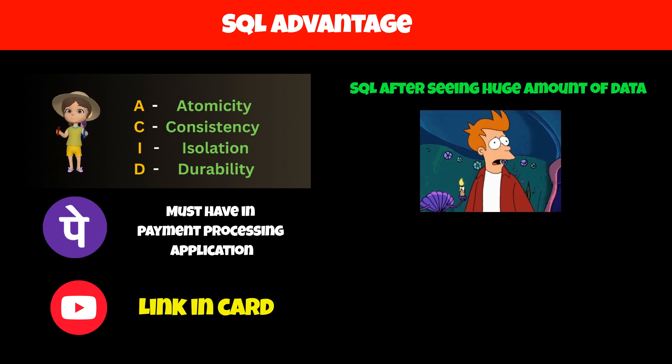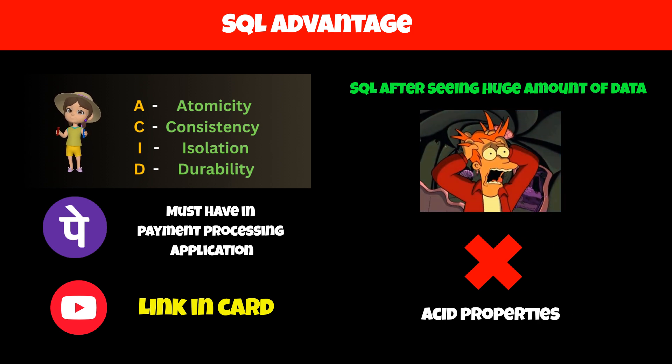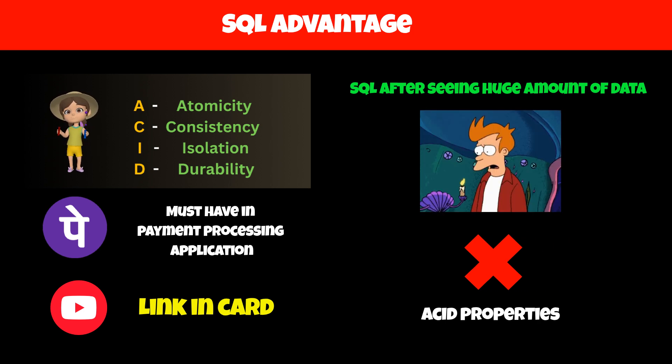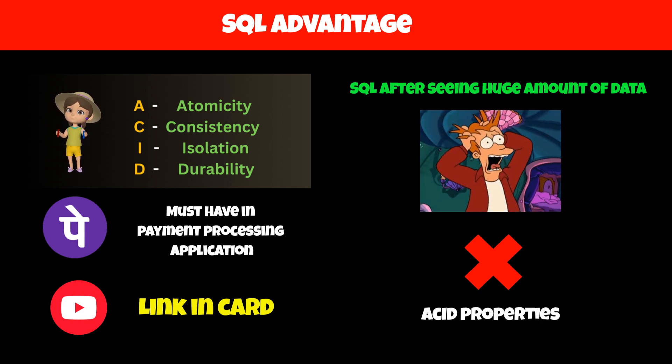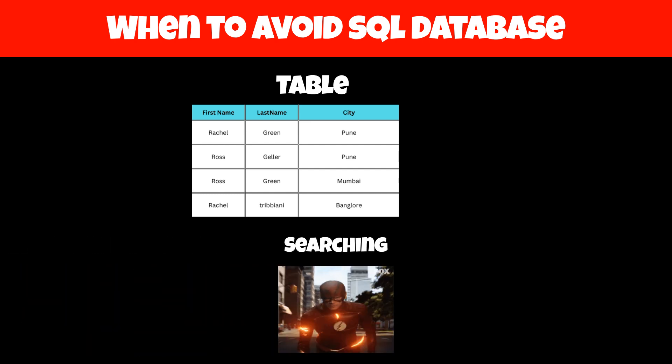However, when the volume of data increases, we have to store data on multiple machines, which doesn't support ACID properties. So SQL is not a good option when dealing with huge amounts of data. SQL is a relational database, which means it has a fixed schema that gives us advantages such as faster searching.